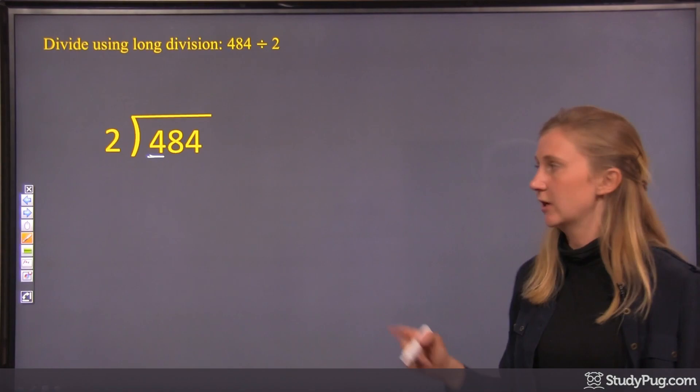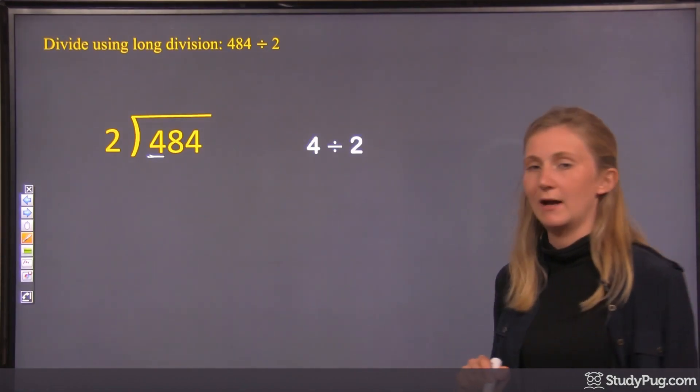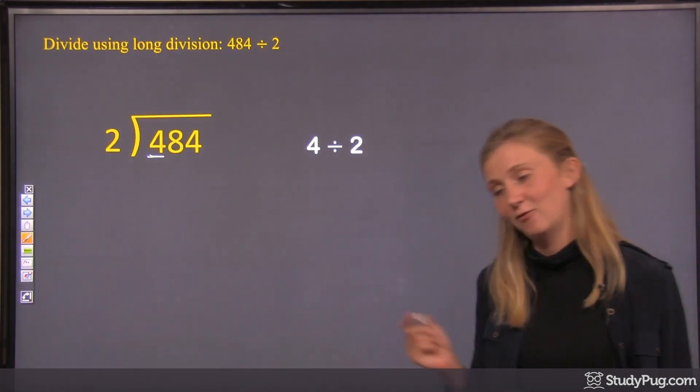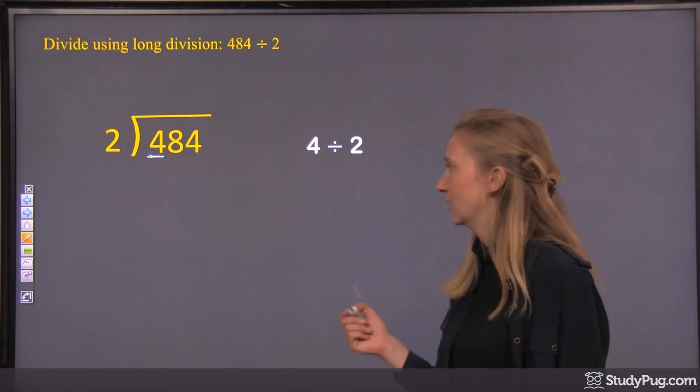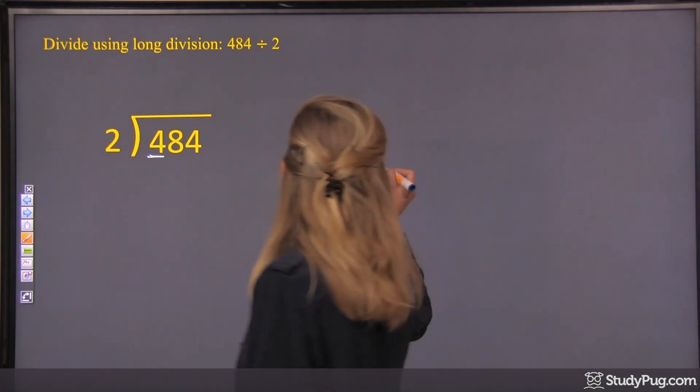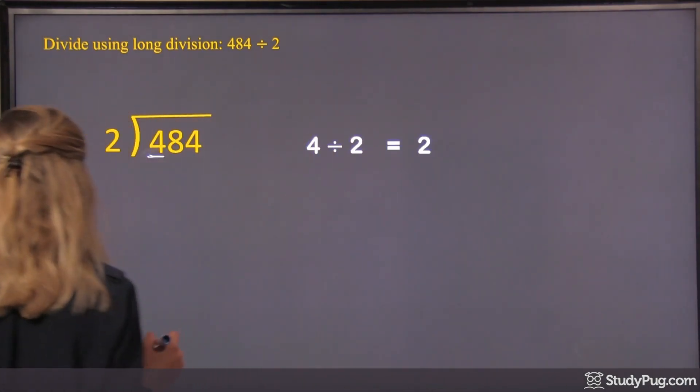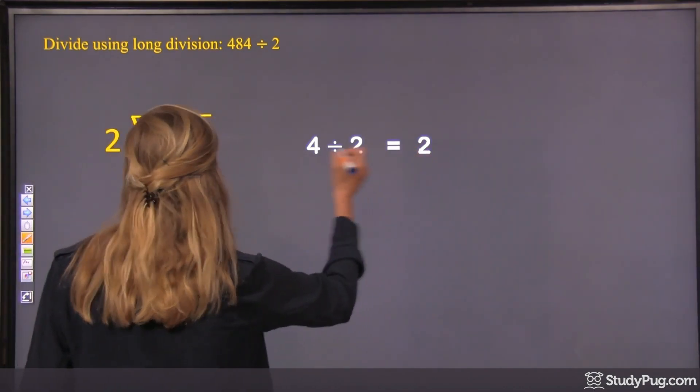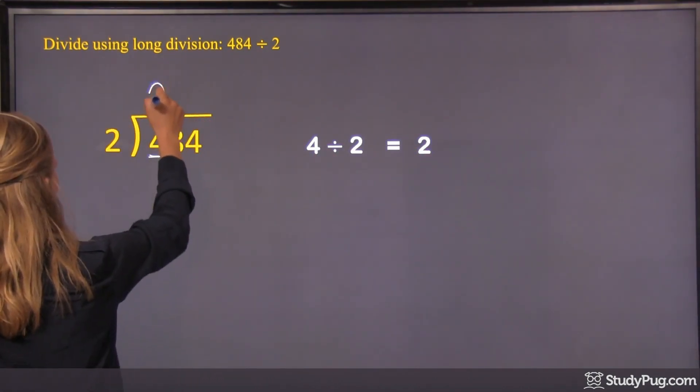So our first step of division is 4 divided by 2. 4 divided by 2 is 2, right? That equals 2. So we're going to take this 2 and place it right here on top of the 4.